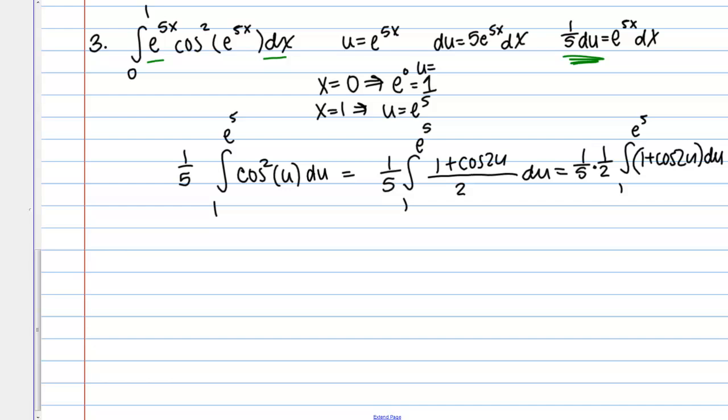Well now I need to integrate 1 plus cosine 2u, so on that 2u part, the cosine 2u, I am going to make a substitution. So I am going to let v equal 2u, so then dv would be 2du, or 1 half dv equals du.